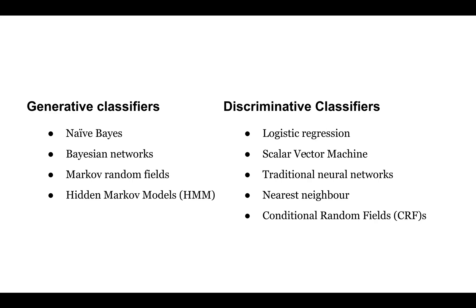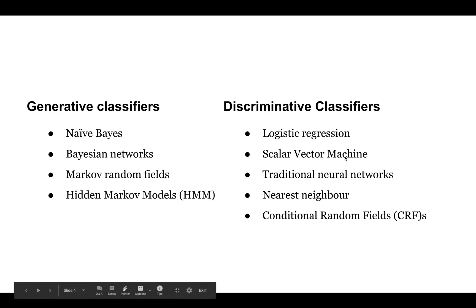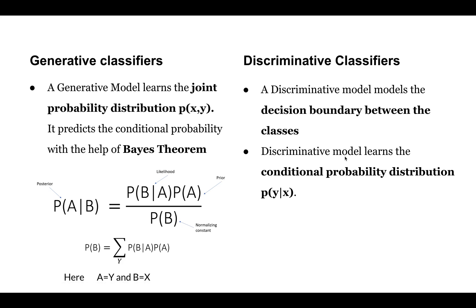For discriminative models, we have to predict only zero or one — a binary output using the decision boundary. Examples include logistic regression, support vector machines, traditional neural networks, nearest neighbor, and conditional random fields. These all belong to discriminative classifiers.